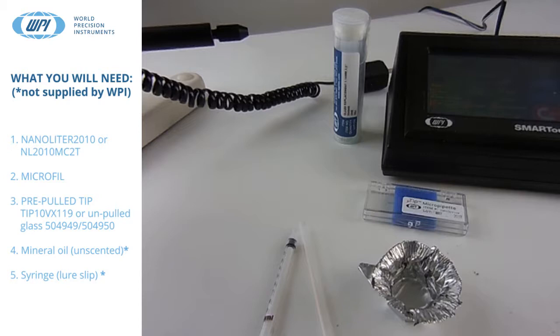Nanoliter 2010 or NL2010 MCT2, Microfill, pre-pulled tips part number TIP10XV119 or un-pulled glass part number 504949 or 504950, mineral oil unscented or uncolored, and a syringe with luer slip.